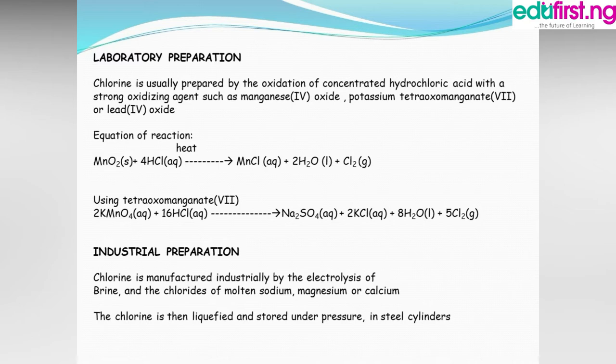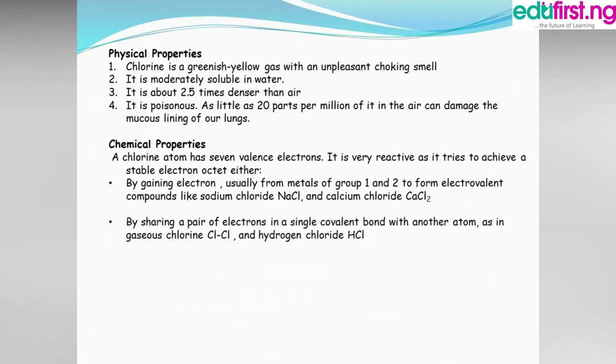How can chlorine be prepared in industries? The way we produce it in industry is different from the lab because larger quantities are used. In industry, chlorine is manufactured by the electrolysis of brine, which is salt water, and the chlorides of molten sodium, magnesium, or calcium. The chlorine is then liquefied and stored under pressure in steel cylinders.